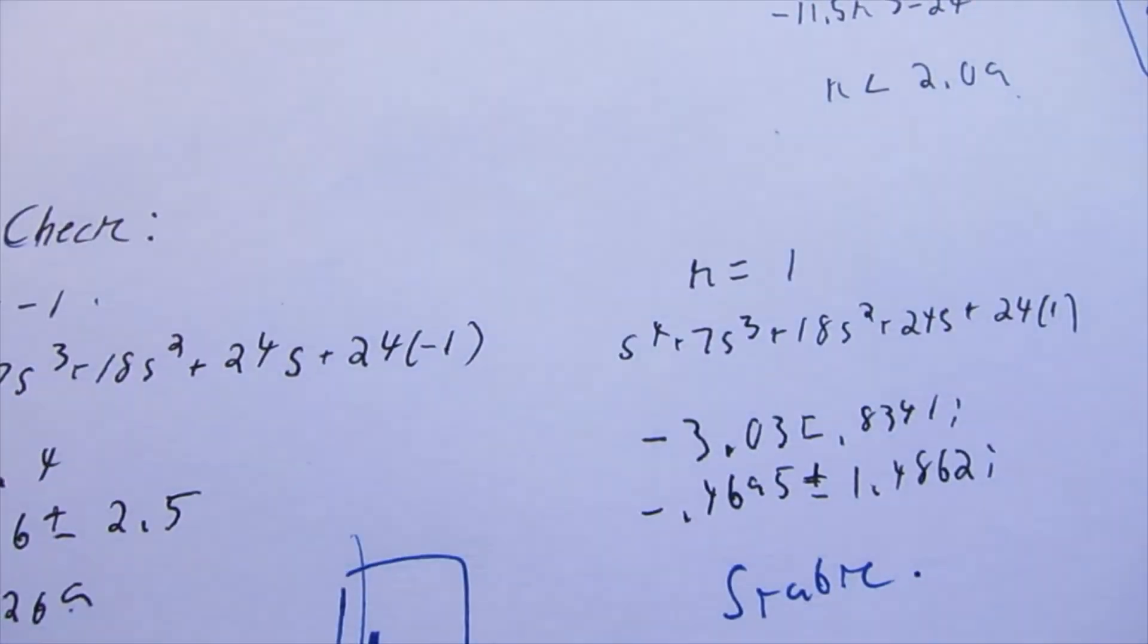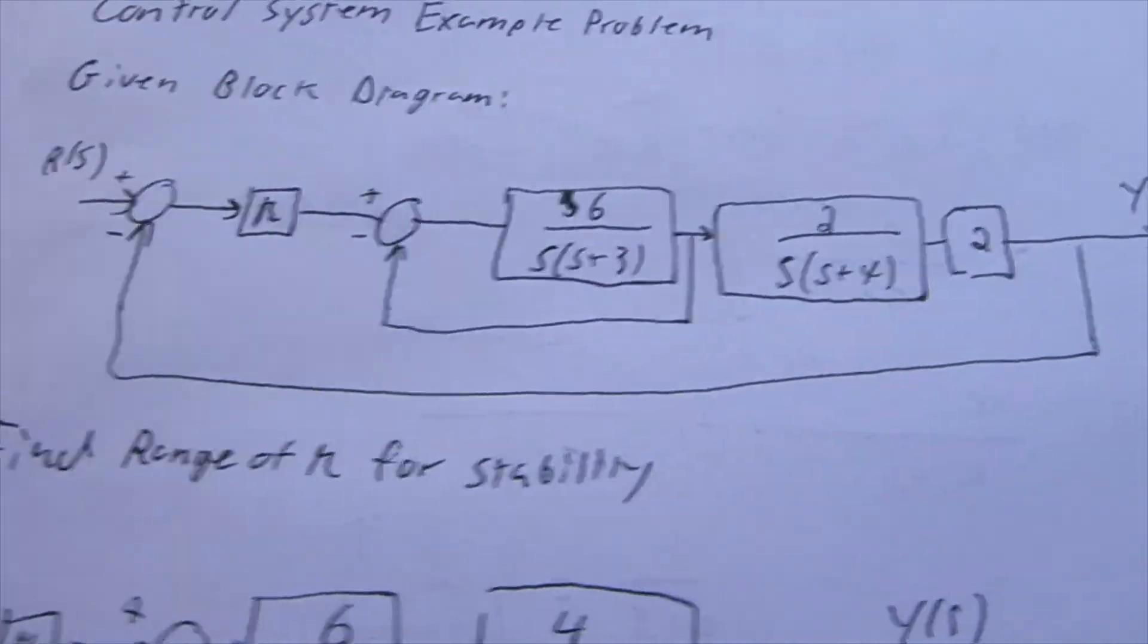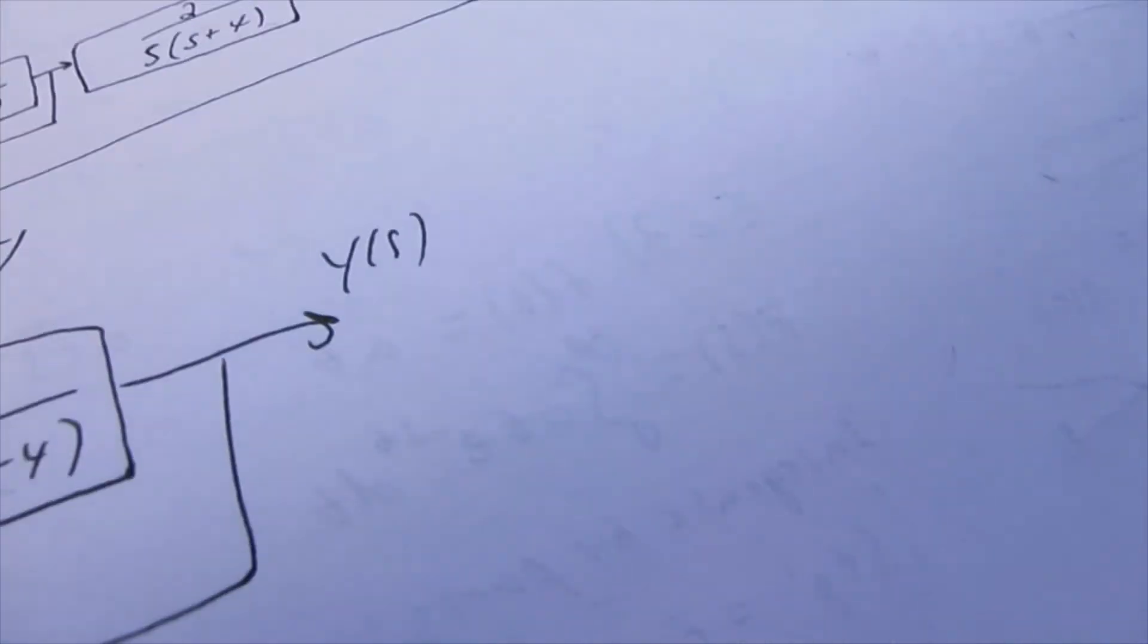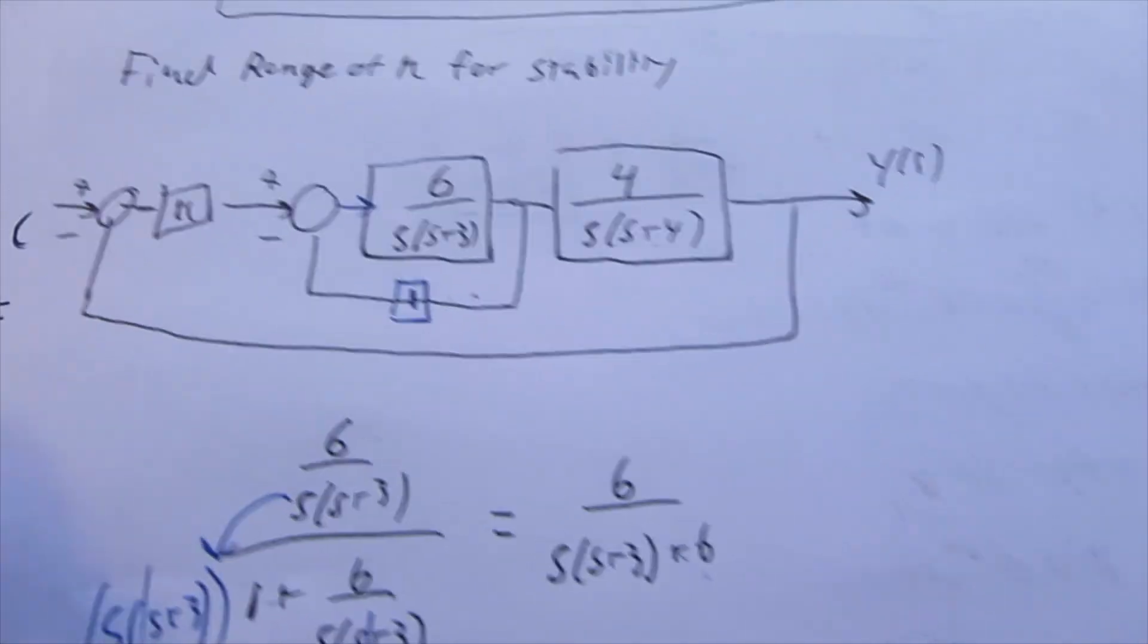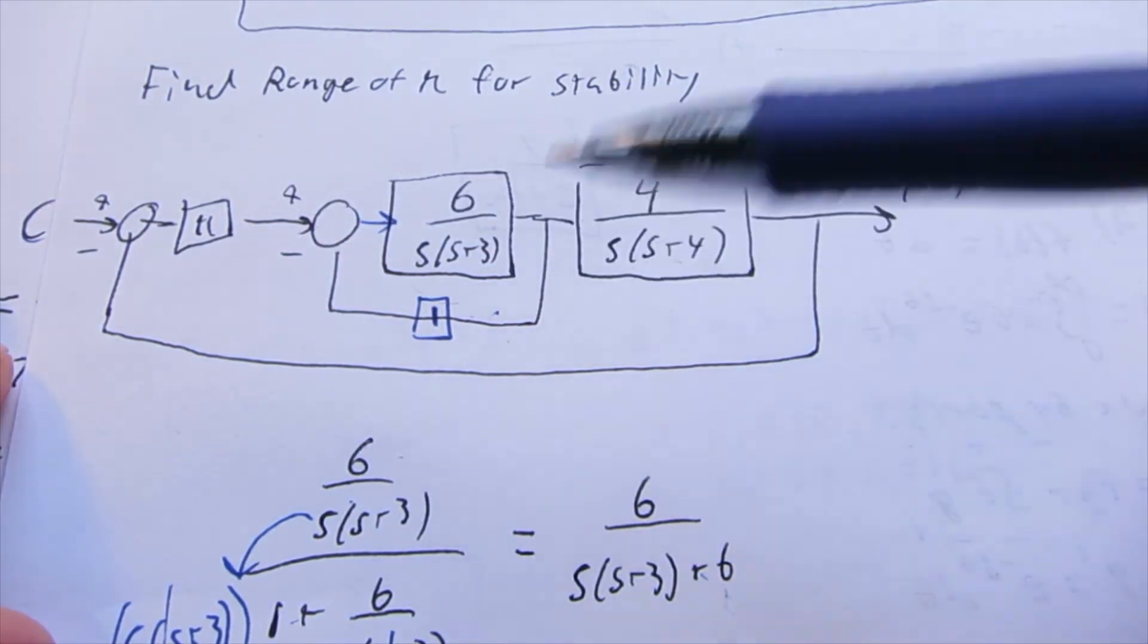So, this is just one quick example problem that uses block diagram reduction and Routh-Hurwitz to determine the stability of this for determining a value of K for this control system.